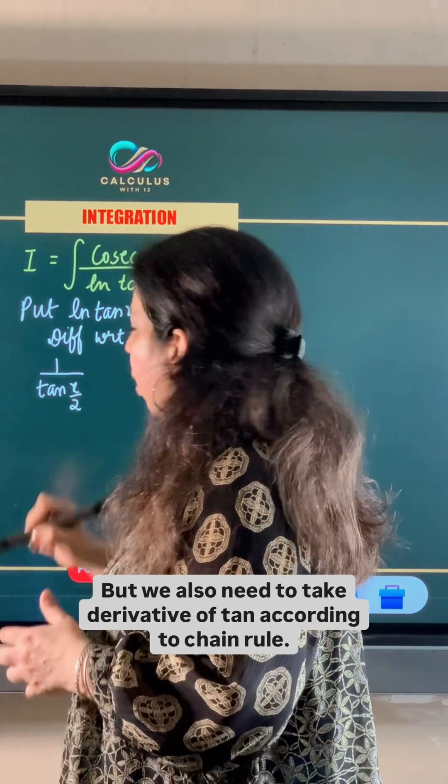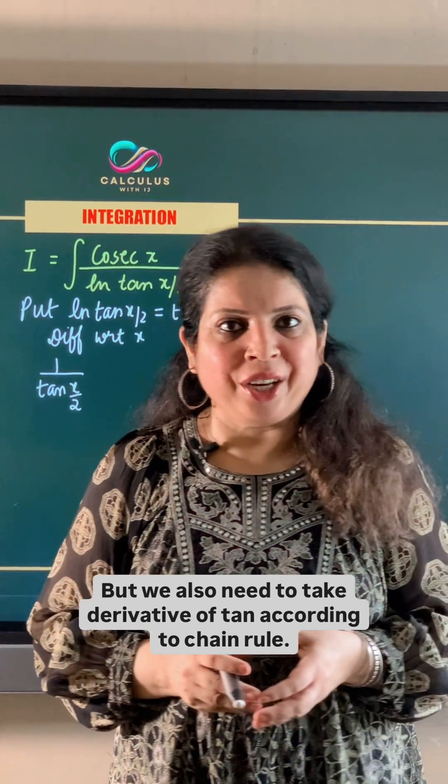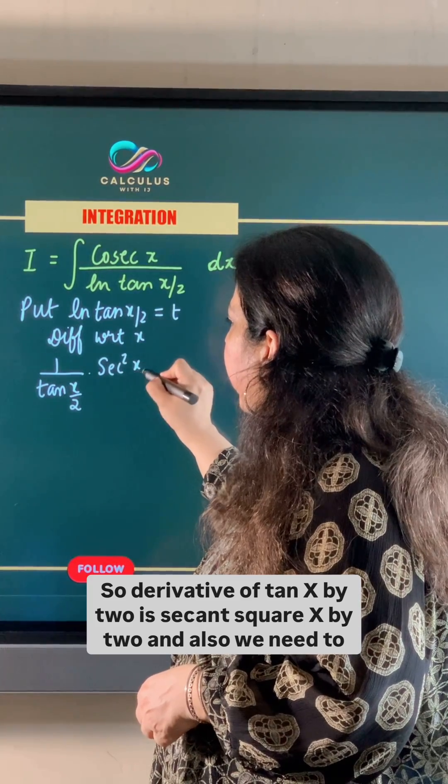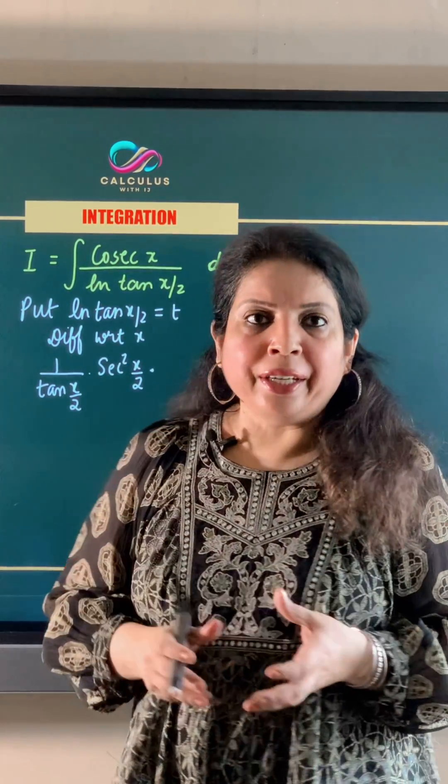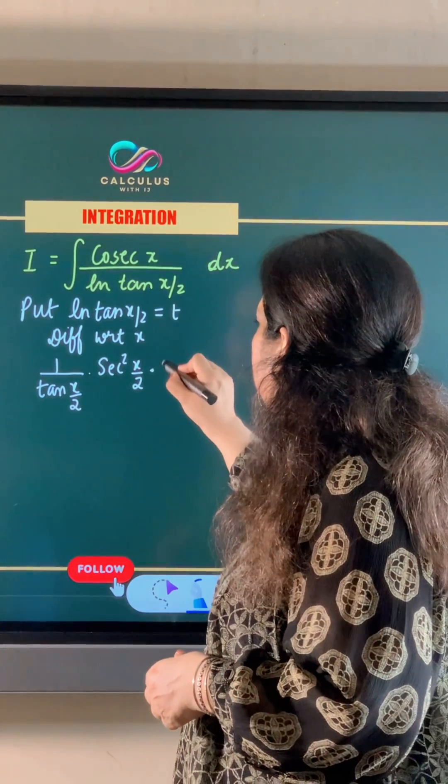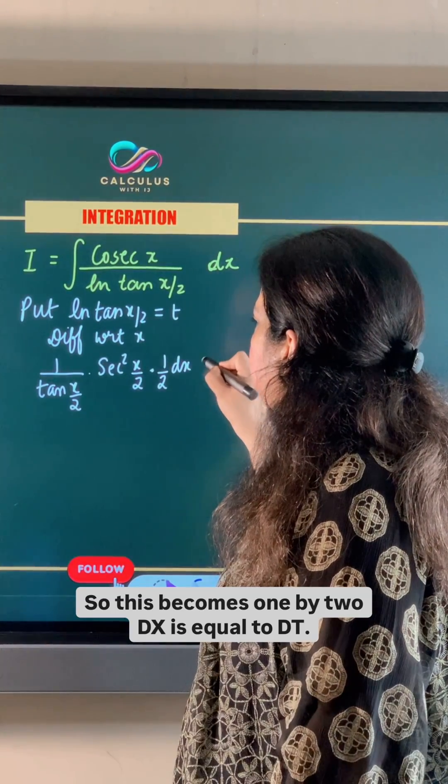But we also need to take derivative of tan according to chain rule. So derivative of tan x by 2 is secant square x by 2. And also, we need to take derivative of x by 2 which is 1 by 2. So this becomes 1 by 2 dx is equal to dt.